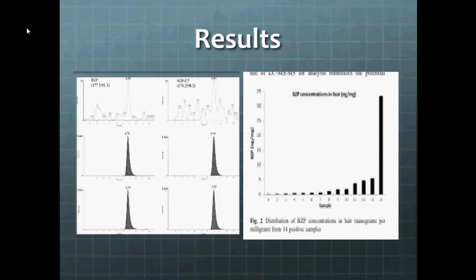As you can see, the baseline is extremely clean because of how selective the method is, so you eliminate a lot of the noise. But if you look to the right, you can see some of the concentrations of BZP that they detected in their samples. The cutoff for what would be considered a negative test is 0.2 nanograms per milligram. So that or lower is considered a negative test.